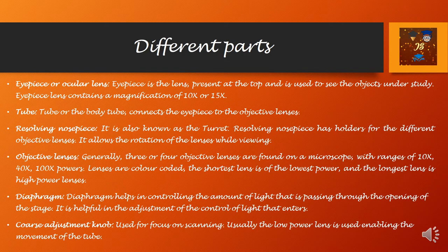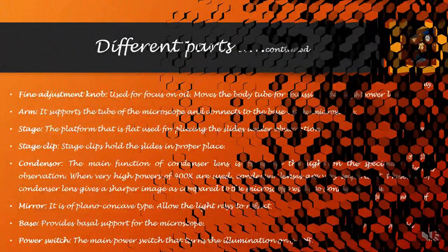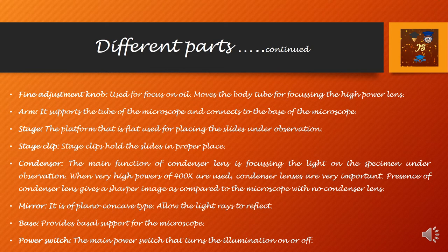These are the different parts of the compound microscope. We can see that the eyepiece is an optical part, the tube is also an optical part, the revolving nosepiece and objective lenses are another optical part. Then the diaphragm, coarse adjustment screw, fine adjustment knob, arm, stage, stage clip, condenser which focuses the light, mirror which reflects the light, base, and the power switch.